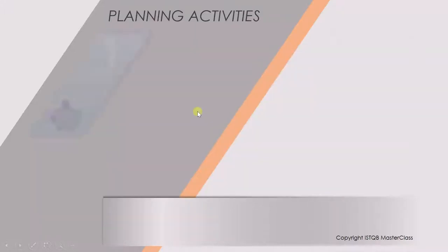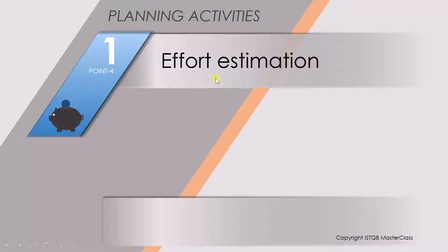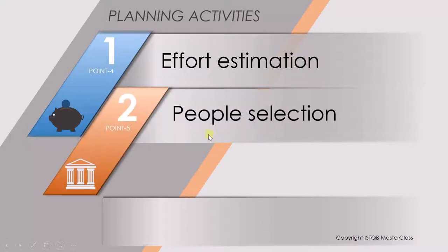Now let's see three more points. The first one is effort estimation — how much time it will take in order to complete one review process or a review process in one cycle. The second point is people selection. When we are doing a review activity, there are different persons who are involved in it, so who will do what type of activity — all those things will be decided in the planning stage.